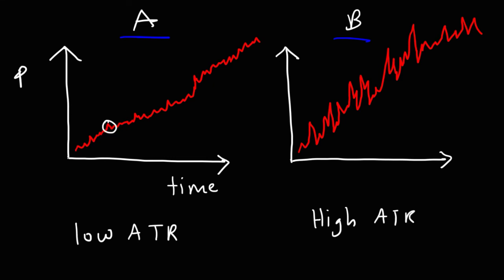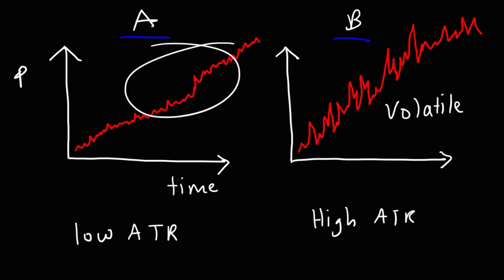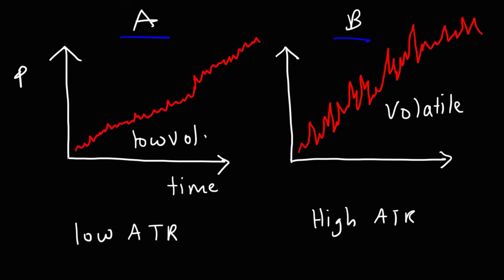If you look at the spikes, the spikes are very small on the left side, which tells you that the daily price changes are minimal. Whereas for the graph on the right, the price fluctuates greatly each day. Because of these huge daily price fluctuations, the ATR value is going to be higher on the right than on the left. So the right stock would be considered a volatile stock, while the left stock has low volatility. That's what the ATR tells you — it measures volatility in the price of the stock.